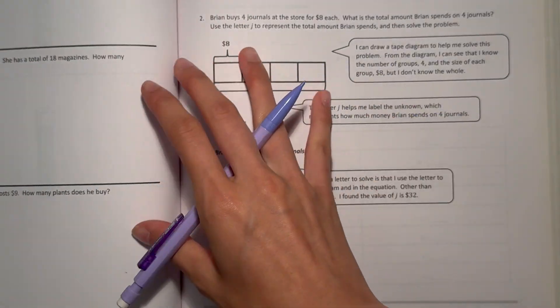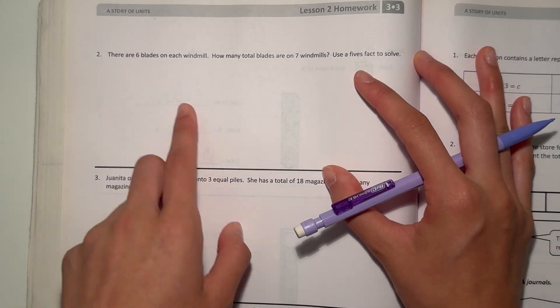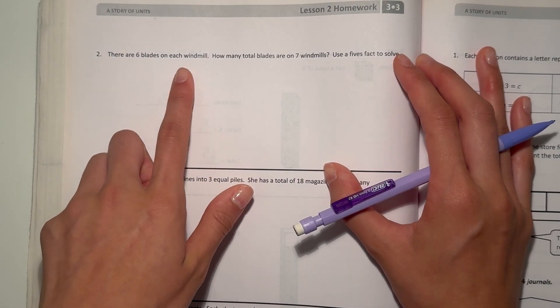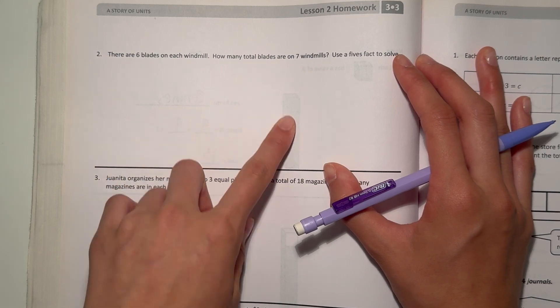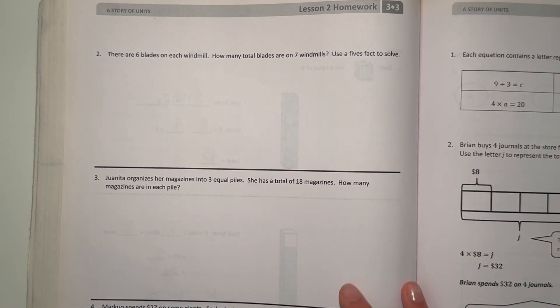Alright, next page. So here are our 5 facts. We have number 2, there are 6 blades on each windmill. How many total blades are on 7 windmills?